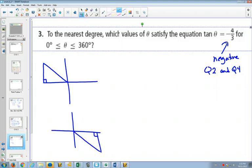Again, our triangles always go to the nearest x-axis because they have to have a reference angle. Now, tan is what over what? Opposite over adjacent. So in this triangle, the opposite side would be 4. The adjacent would be 3. In this triangle, the opposite side would be 4. The adjacent would be 3.